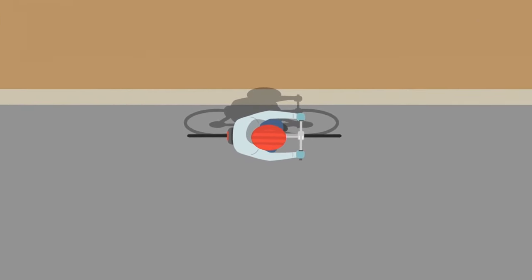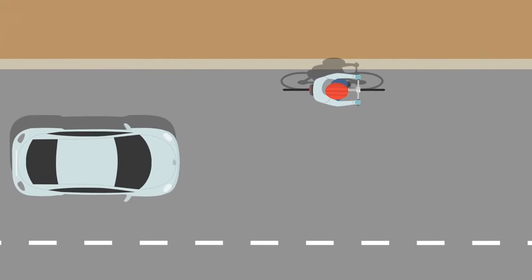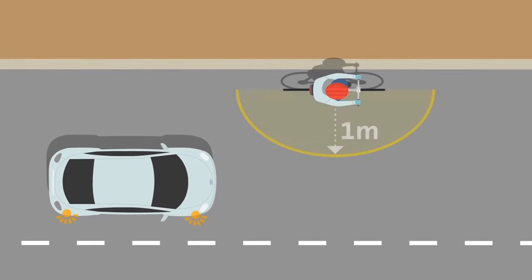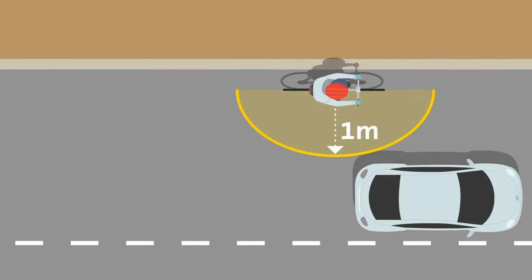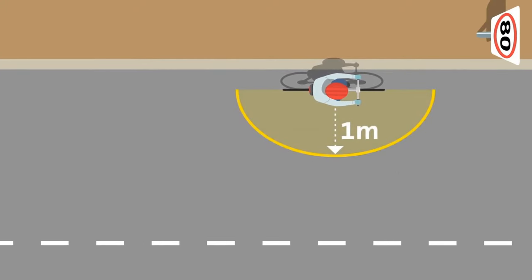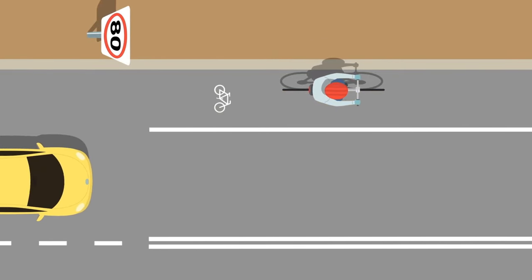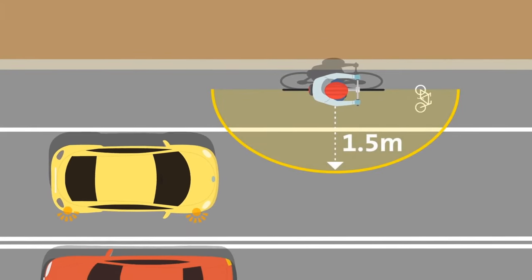When overtaking cyclists in speed zones 60 k's and below, you must provide a distance of at least 1 metre. In speed zones above 60 k's, the minimum overtaking distance is 1.5 metres.